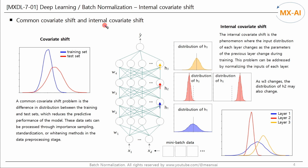Now let's look at the internal covariate shift problem. A common covariate shift problem is the difference in distribution between the training and test sets, which reduces the predictive performance of the model. These datasets can be processed through importance sampling, standardization, or whitening methods during preprocessing. The internal covariate shift is the phenomenon where the input distribution of each layer changes as the parameters of the previous layer change during training.